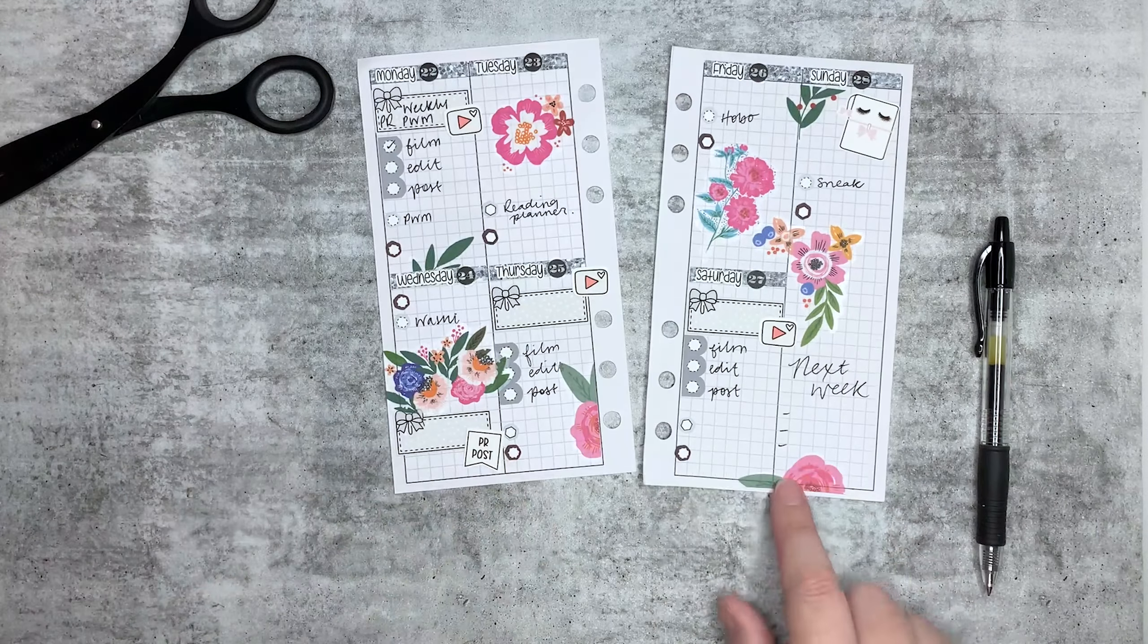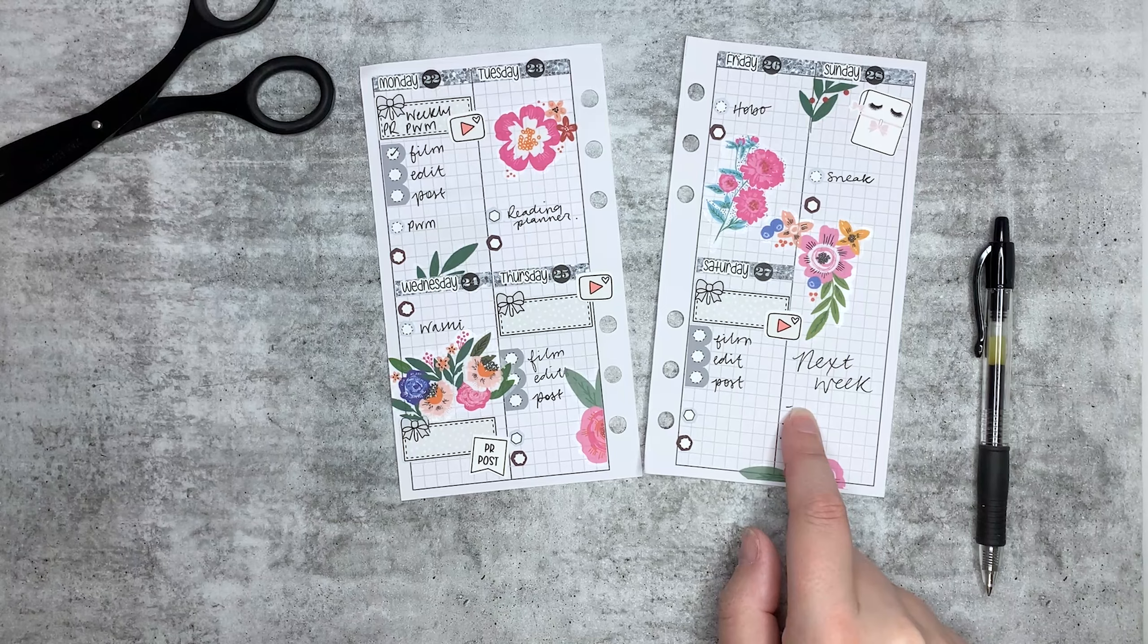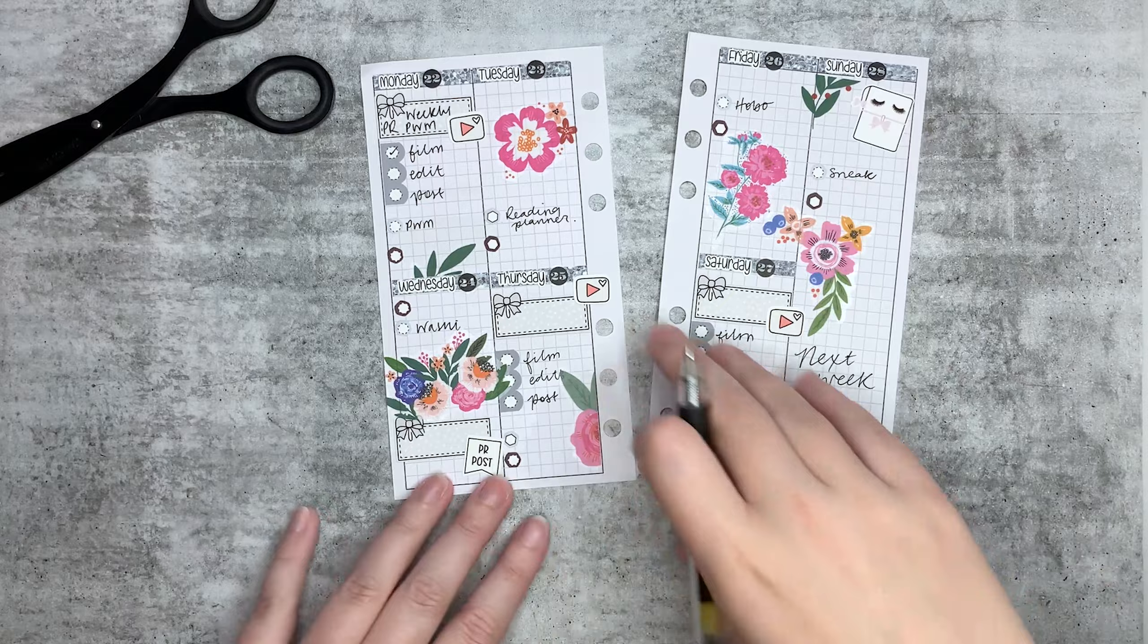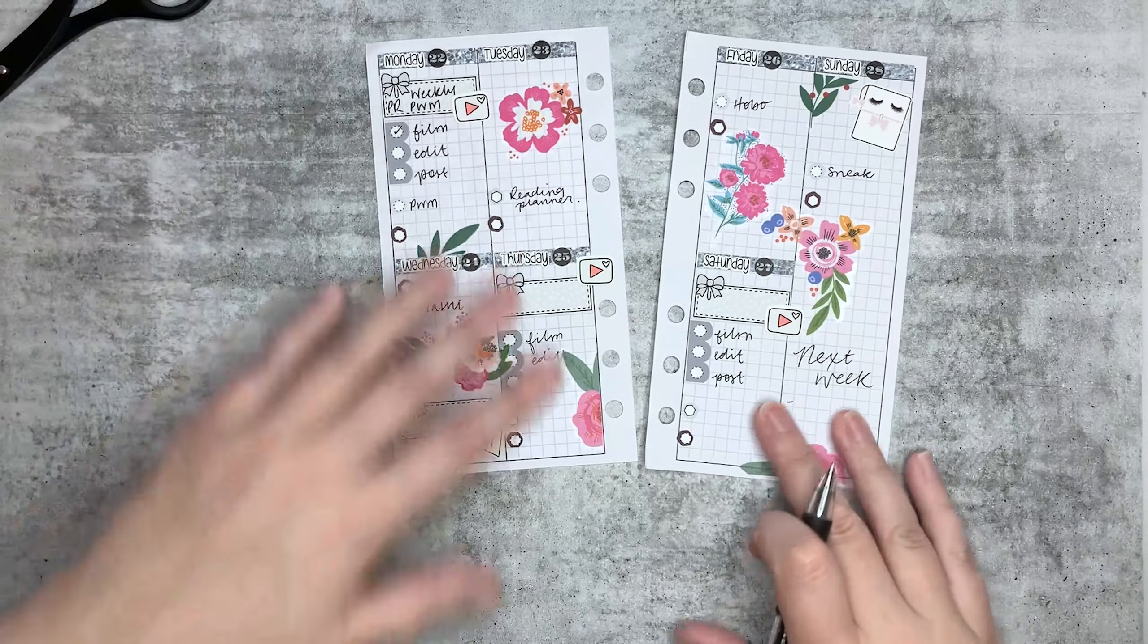There we go. I feel like I'm missing something down here, but I don't know. I think it's just because this side's really blank compared to this bit. Anyway, I'm going to leave it there. Let me just put it in my planner and we'll have a look, see how it looks.